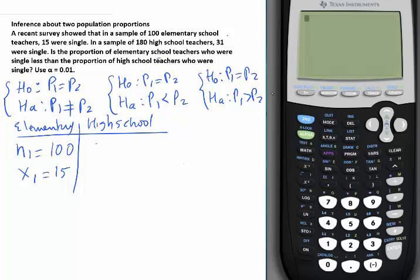In a sample of 180 high school, so I have to call this N2. And how many were single here? It's 31. Is the proportion of elementary school teachers who were single less than the proportion of high school teachers who were single? So he's asking us if P1 is less than P2. So which one would that be? It's the one in the middle here. So my first step is to write the null and alternative hypothesis. P1 equals P2. It's always equal here. HA P1 is less than P2. That's your first step.